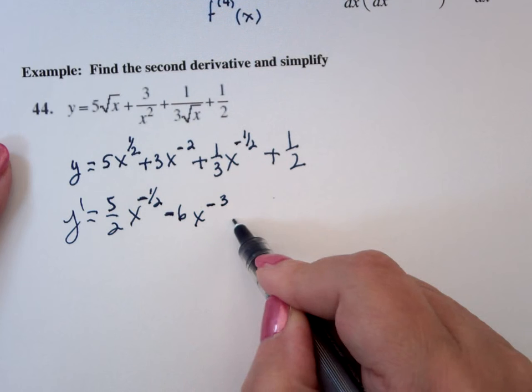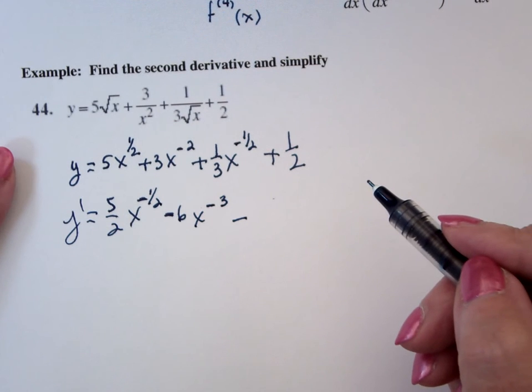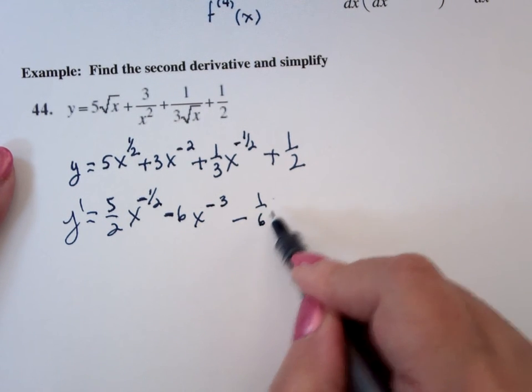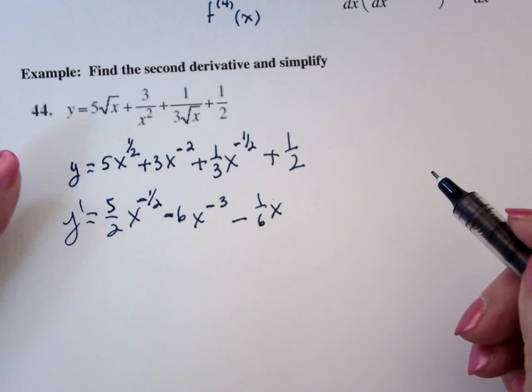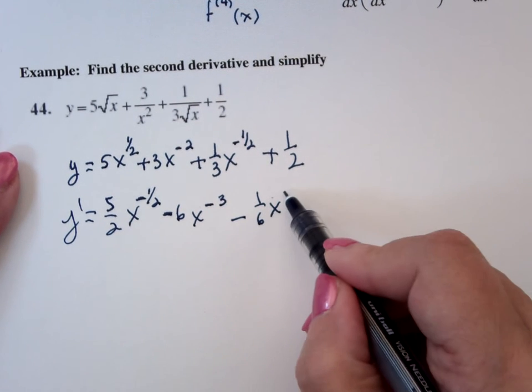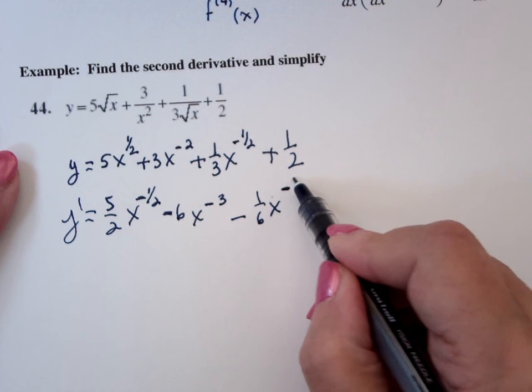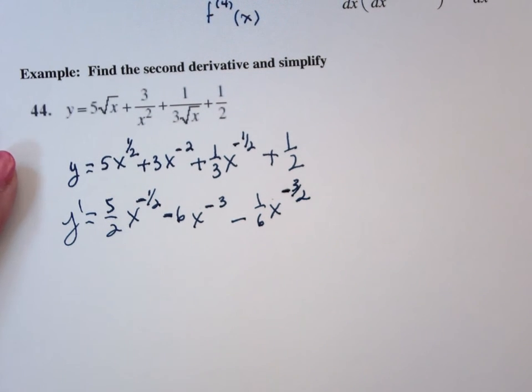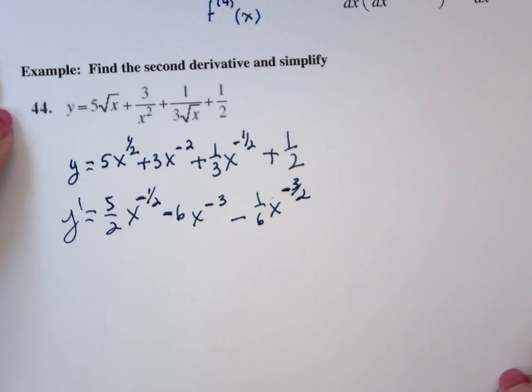minus -1/2 times positive 1/3 is -1/6 x, drop the power, should be negative what? 3/2. And then derivative of 1/2 is? Zero.